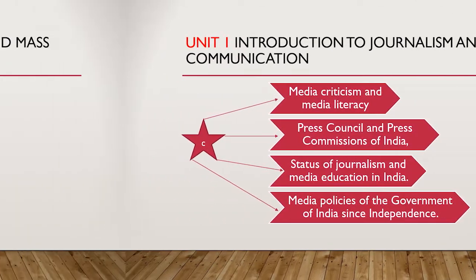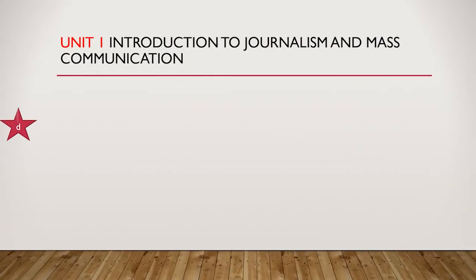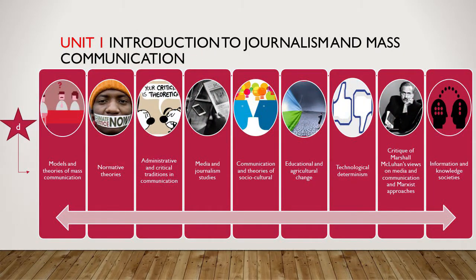Now quickly moving on to the fourth part of the first unit, Introduction to Journalism and Mass Communication, where we will be studying the models and theories of mass communication, followed by normative theories, administrative and critical traditions in communication, media journalism studies, communication and theories of social culture, education and agricultural change with technological determinism, and finally a criticism of Marshall McLuhan's view on media communication. This concept also consists of the Marxist approach, and the last part of the fourth section is the Information and Knowledge Society.